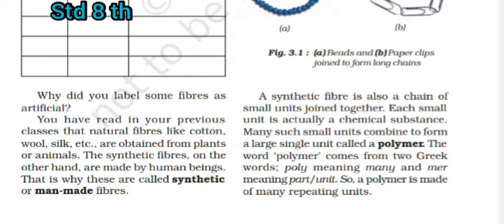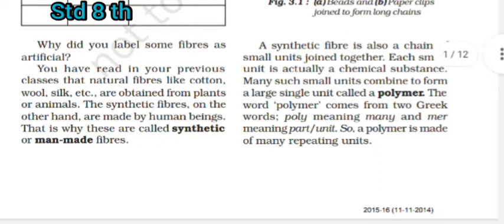A synthetic thread is also made of small units joined in the form of a chain — these units are chemical substances. Many such small units combine to form a large single unit called a polymer. The word polymer comes from two Greek words: 'poly' meaning many, and 'mer' meaning part. So many parts put together form what we call a polymer.